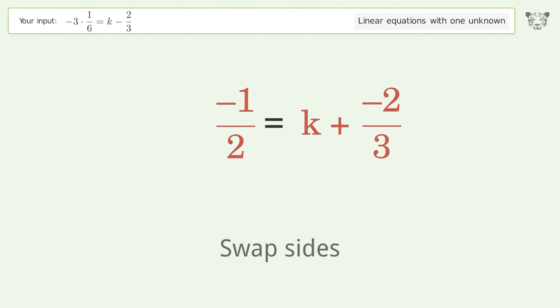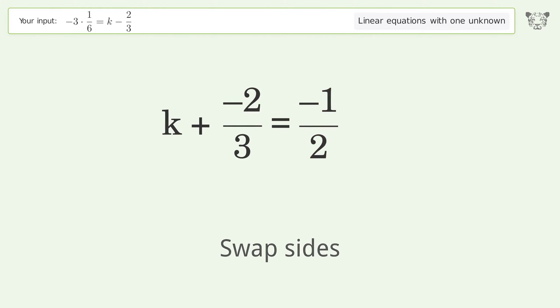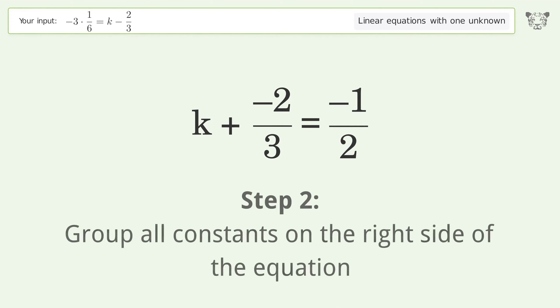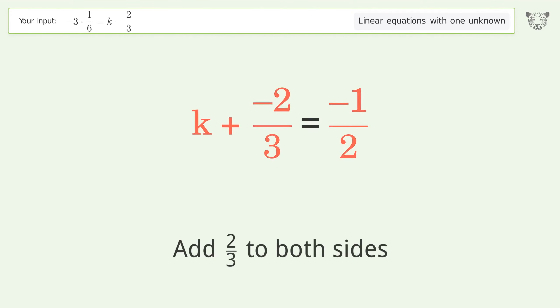Swap sides. Group all constants on the right side of the equation. Add 2 over 3 to both sides.